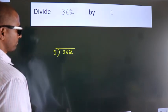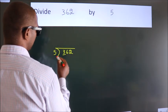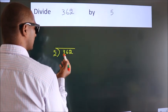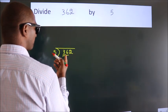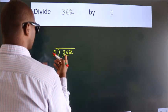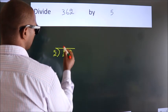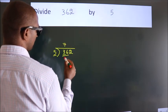Next, here we have 3, here 5. 3 is smaller than 5, so we should take two numbers, 36. A number close to 36 in the 5 table is 5 times 7 equals 35.